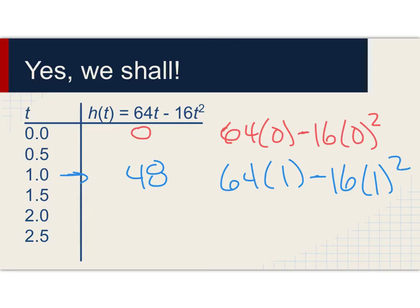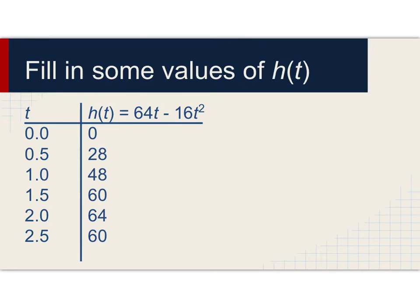We'll fill in the rest of the table accordingly. At time zero, the height was zero. After half a second, the arrow was 28 feet up in the air. At one second, it's at 48 feet. One and a half seconds, 60 feet. At two seconds, the arrow has a height of 64 feet. And at two and a half seconds, we're at 60 feet.